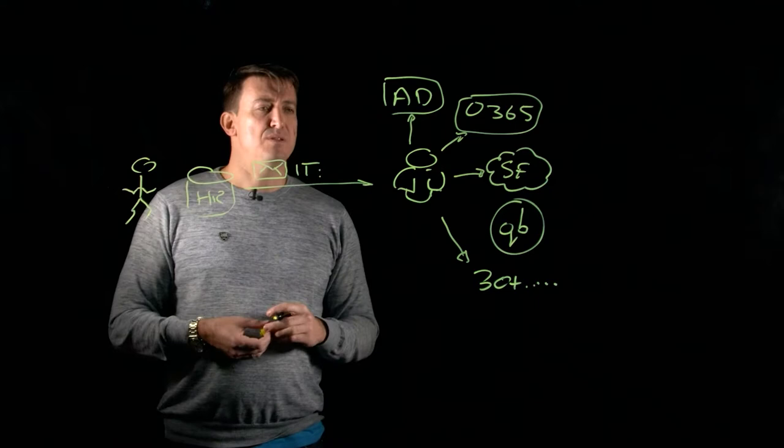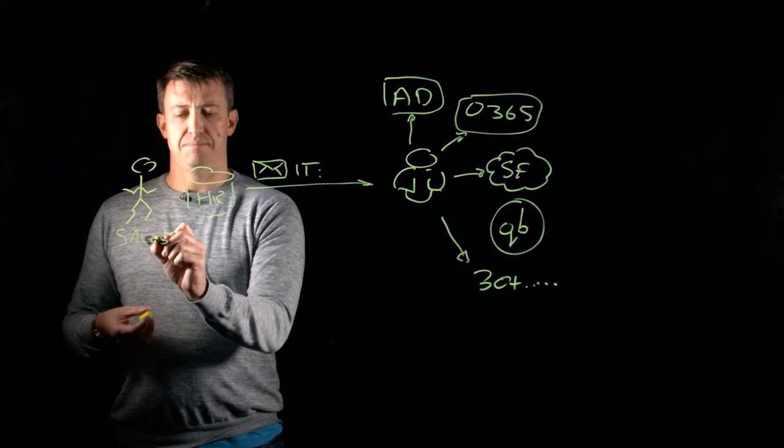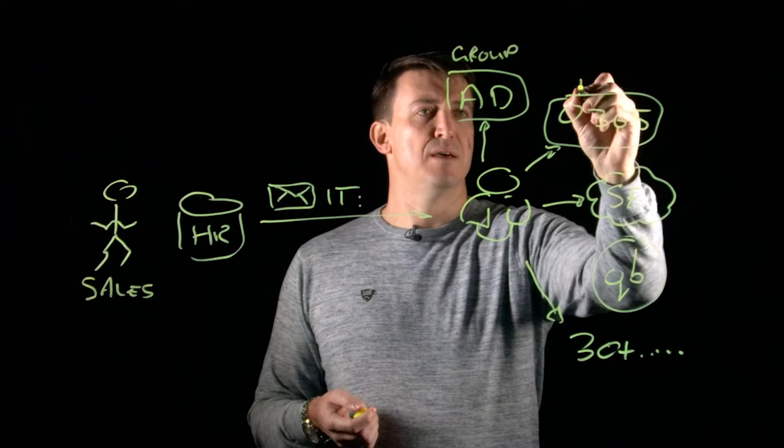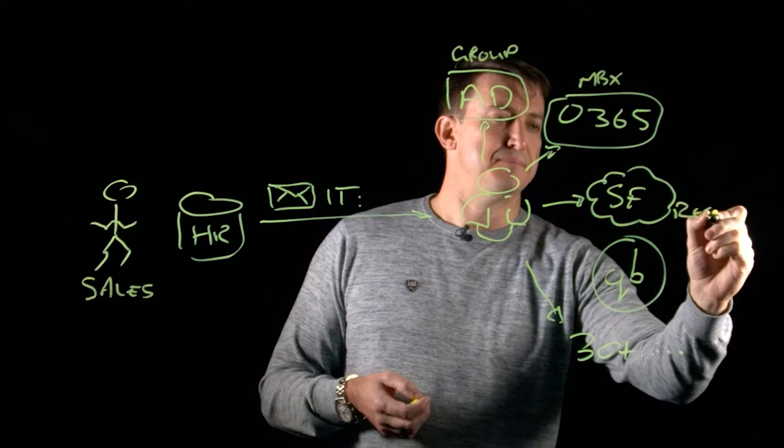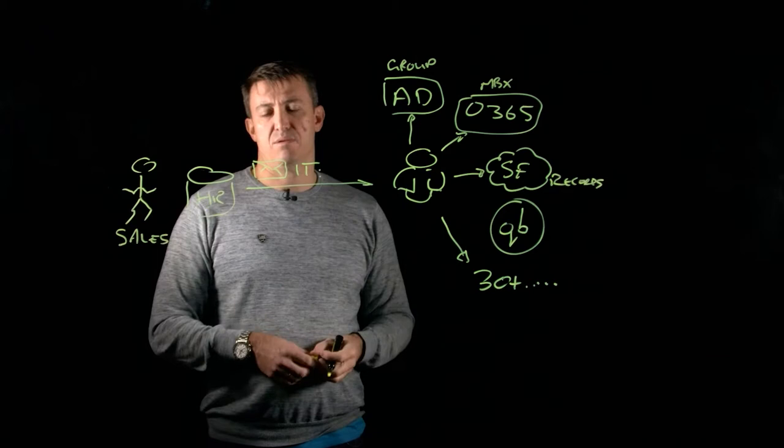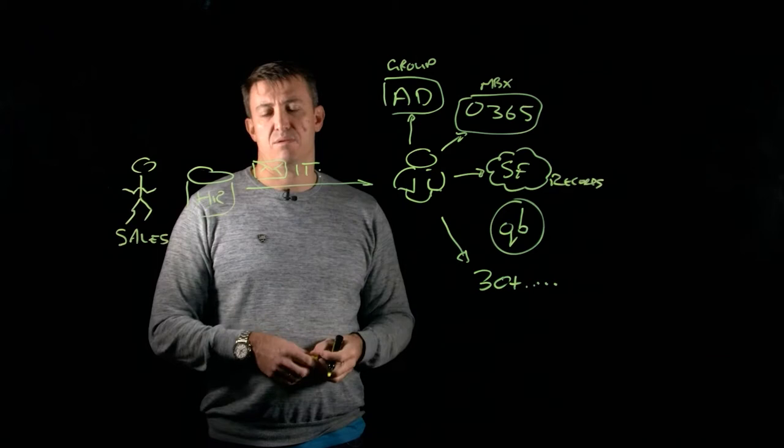They end up copying the permissions from a similar user. So if we take, for example, this user has joined the sales department, the IT guy is going to look at someone in the sales department and then go and create all of the permissions and all of the group memberships within Active Directory for somebody in sales, give them access to those mailboxes and give them access to those sales records. Now that may be correct for this user, but this user may have different responsibilities within your organization and those permissions might not be correct for that user.